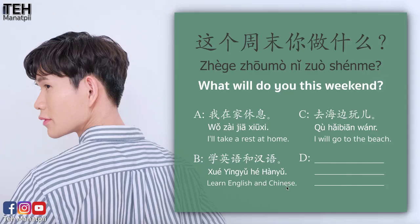ตัวเลือก ค. ที่หายเปลี่ยนหวัร — I will go to the beach. ฉันจะไปเที่ยวทะเล ที่ ก็คือ go หายเปลี่ยน ก็คือ beach ทะเล ว่าศ ก็คือ เที่ยวเล่น ในที่นี้ไม่ได้แปลตรงตัว แต่ภาษาอังกฤษเราพูดแบบนี้แหละ